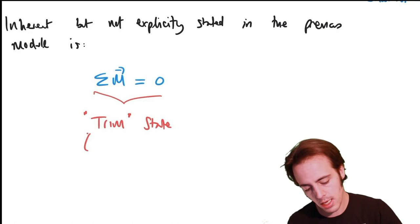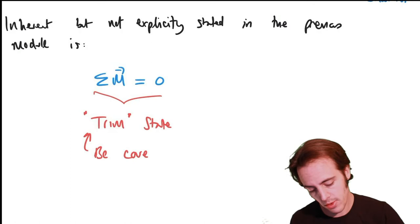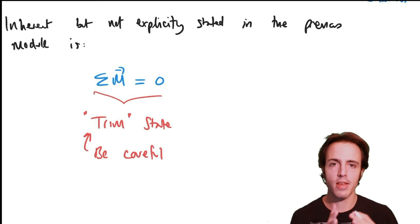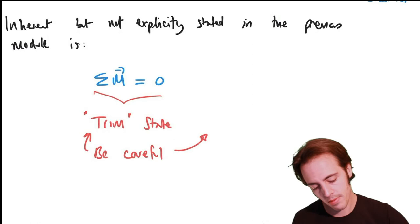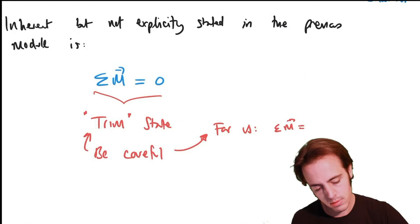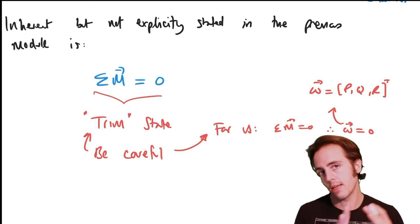We have to be careful with the word 'trim' in aircraft flight mechanics, because it has a few different meanings. For our purposes, trim means that the aircraft has a zero net moment — so it has no angular velocity. The angular rotation vector omega, which we will learn is p, q, and r, is zero because the sum of moments is zero.